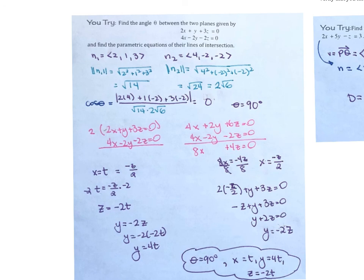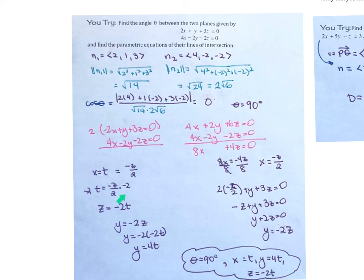Trying this out, you would find that theta is 90 degrees, because the dot product of n1 and n2 equals 0. So cosine of theta equals 0, which means theta equals 90 degrees. Solving the system, you find x equals negative z over 2. Setting x equal to t gives z equals negative 2t. Then solving for y gives y equals negative 2z, so y equals 4t. Therefore: x equals t, y equals 4t, and z equals negative 2t.